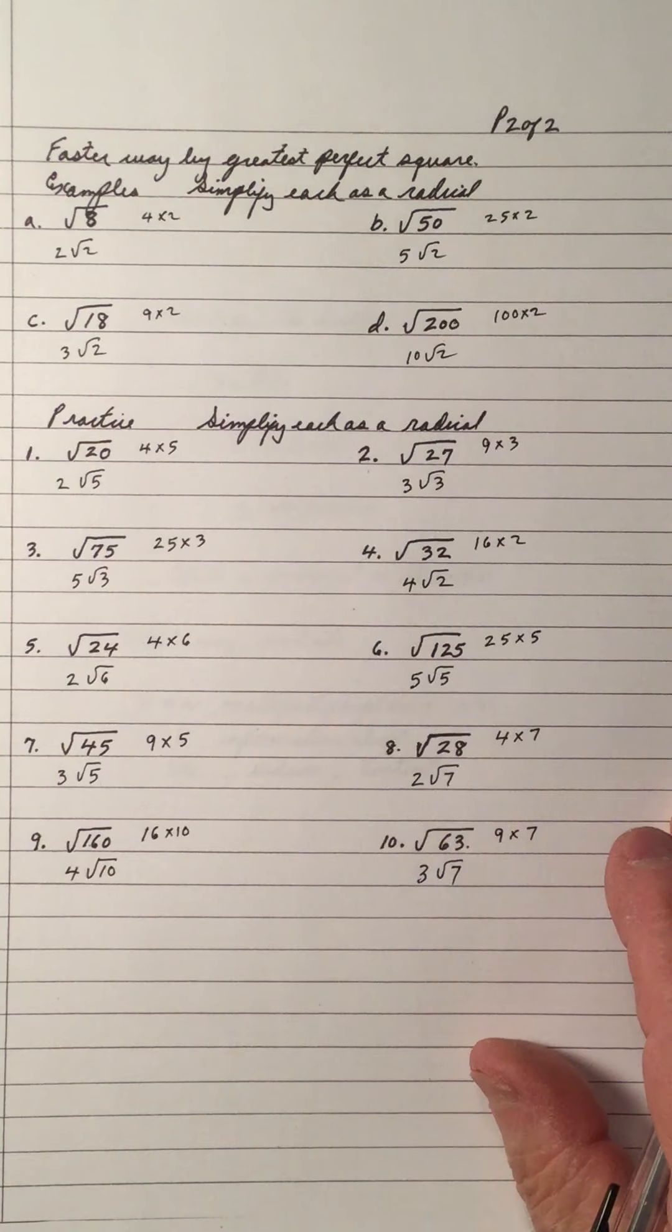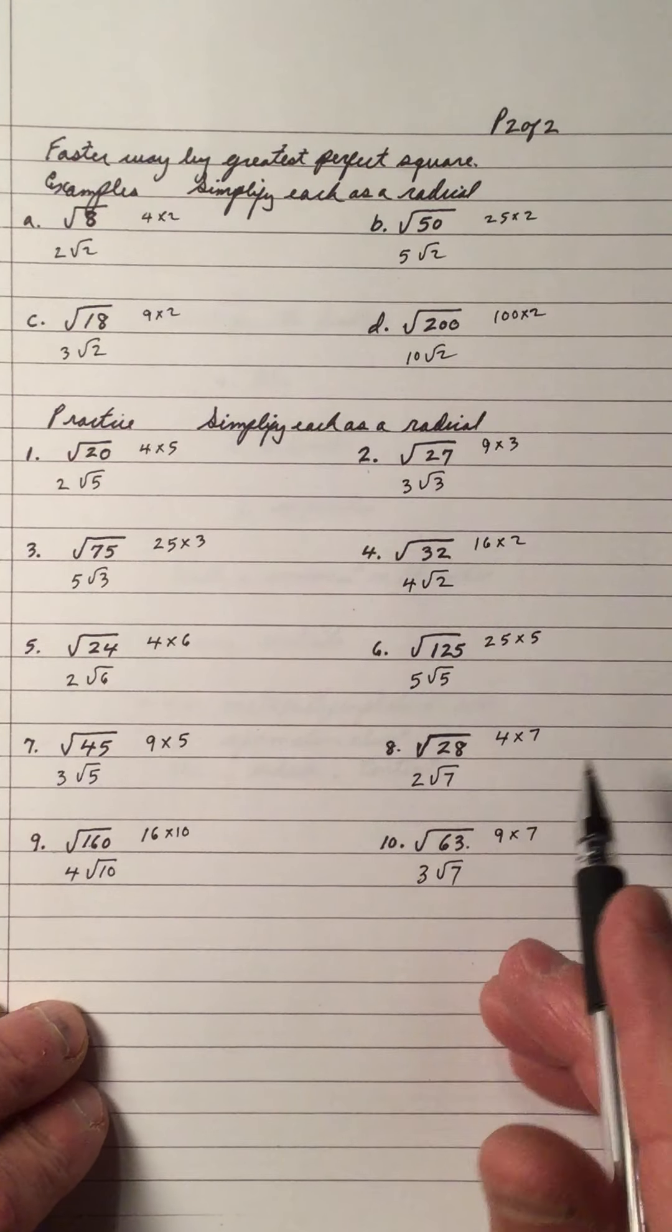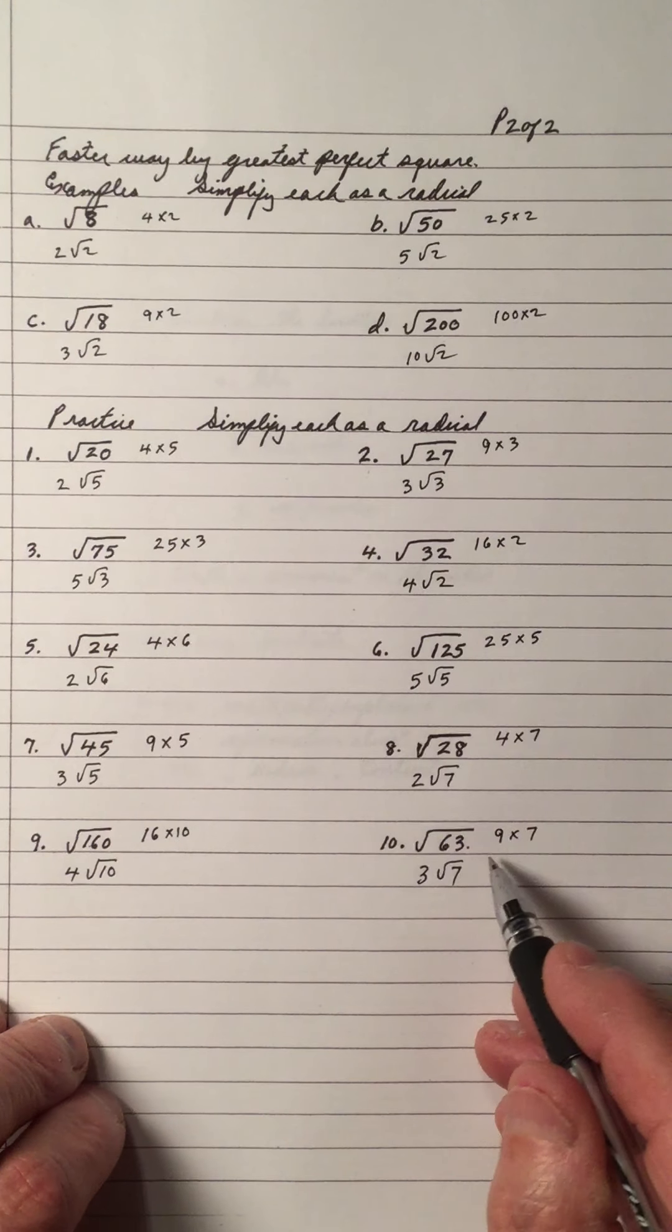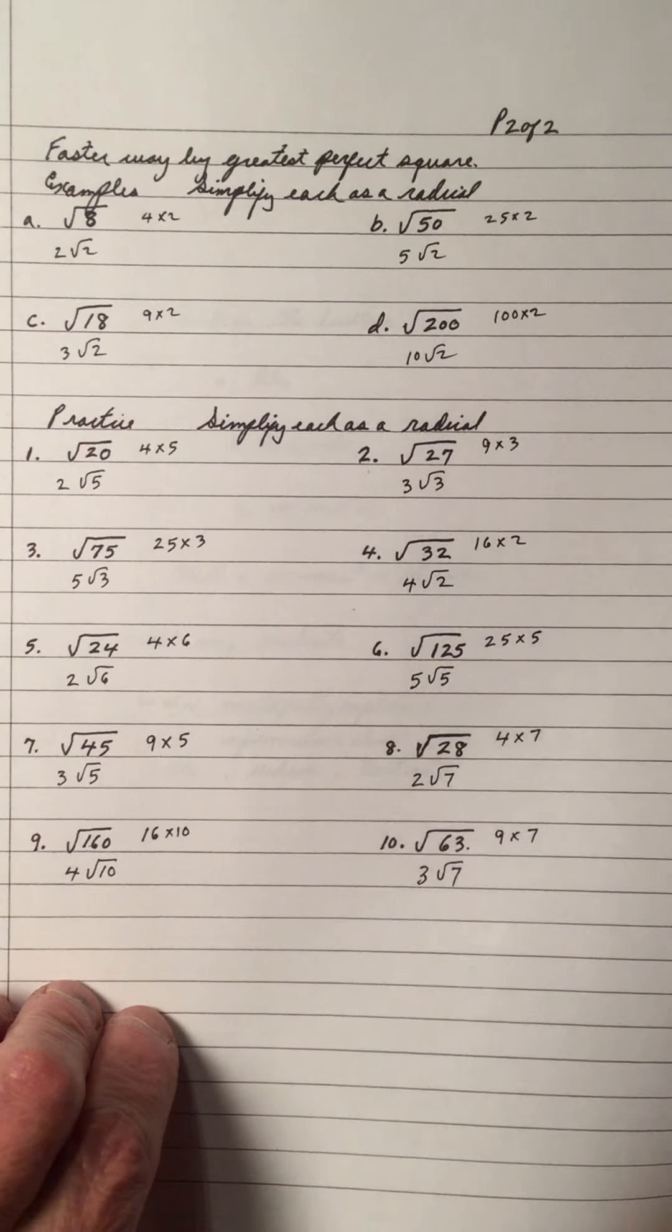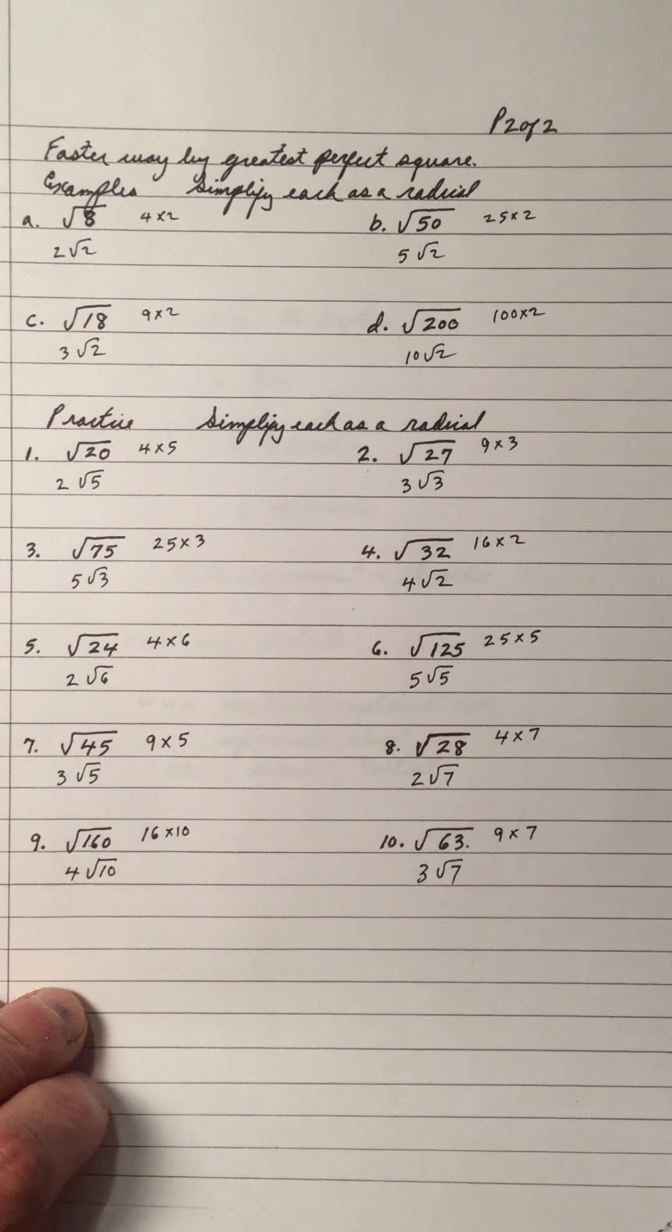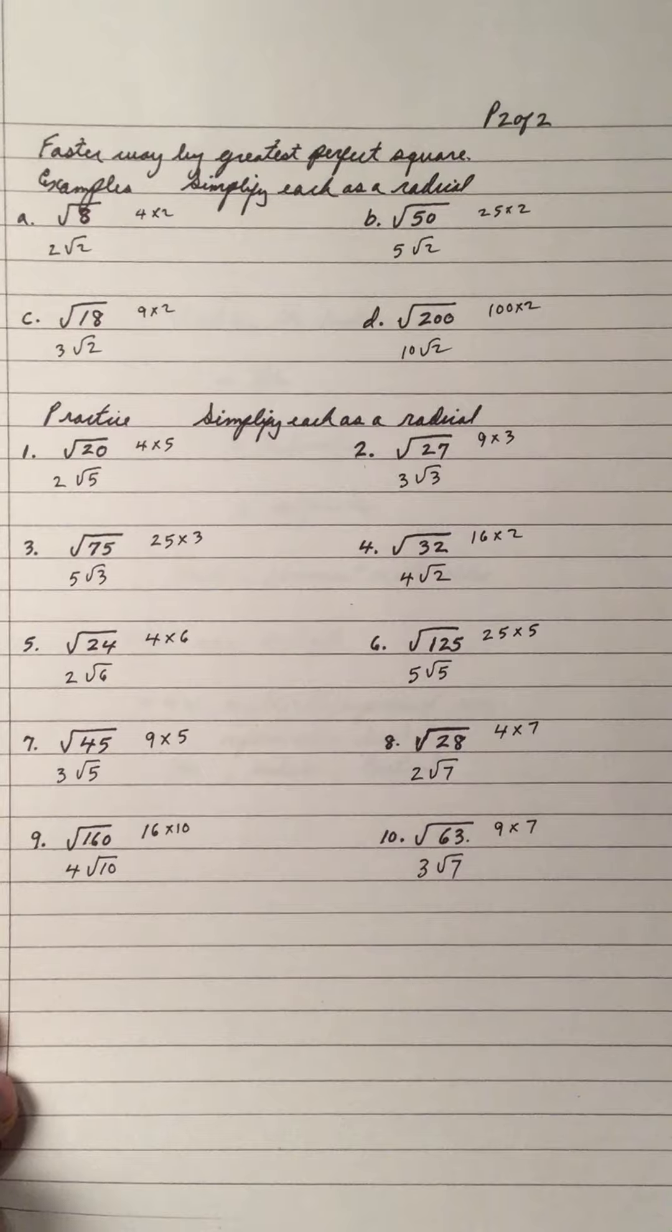So notice this is the fast way to do it when you come up with the perfect square as the largest perfect square as a factor without writing all the steps. So it's nice to do it this way because you'll have more simplification to do.